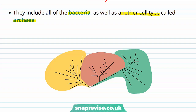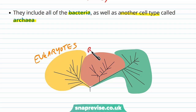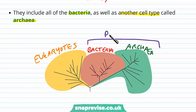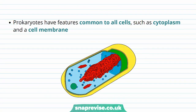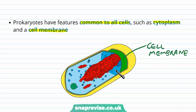Prokaryotes include all bacteria and another type of cell called archaea. There are three domains of types of cell: eukaryotes, which include animals, plants, fungi, and some other organisms; bacteria; and archaea. Bacteria and archaea are both under the heading of prokaryotes. Some features are common to all cells, for example the cytoplasm and a cell membrane. The cell membrane delineates the edge of the cell, and the cytoplasm is the solution and gel-like substance where all the reactions tend to happen, containing dissolved molecules and solutes.